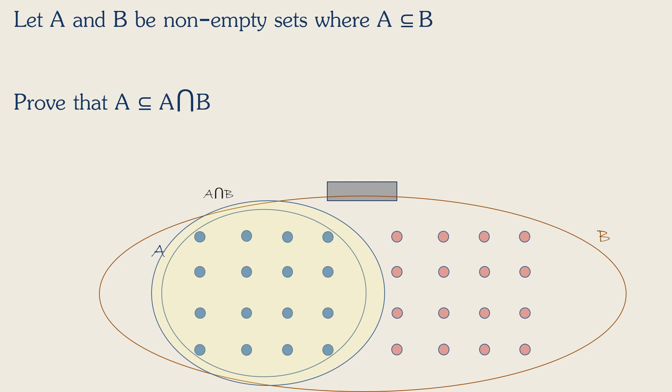But A and A intersection B are kind of the same thing. The group of all the boys in the classroom isn't just a part of the group of all the children in the classroom who are also boys. It is the group of all the children in the classroom who are also boys.